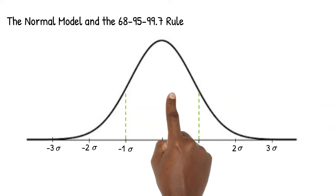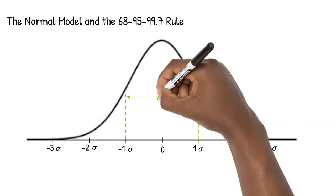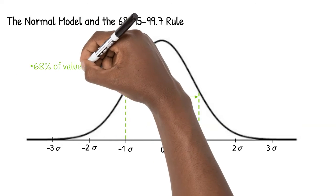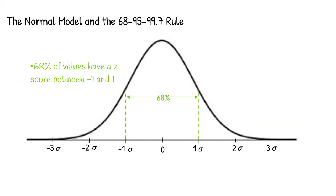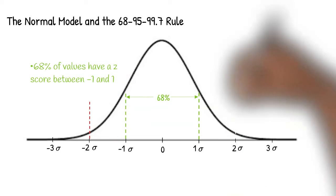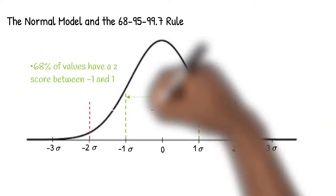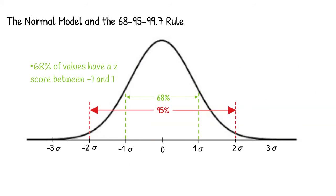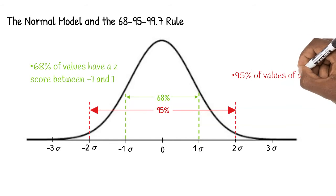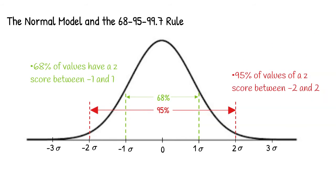The model goes into even more detail, telling us that 68% of the values are within one standard deviation of the mean. In other words, 68% of the values have a z-score between negative one and one. 95% of the values are within two standard deviations of the mean — in other words, 95% of the values have a z-score between negative two and two.